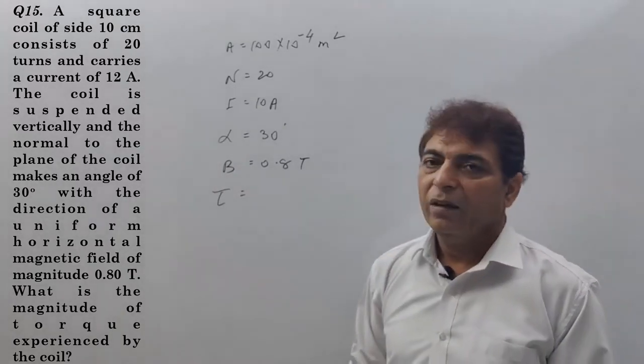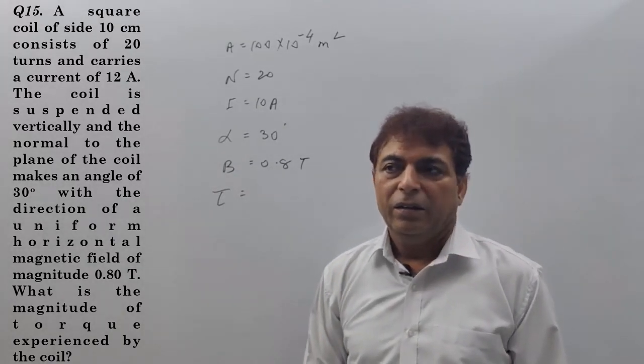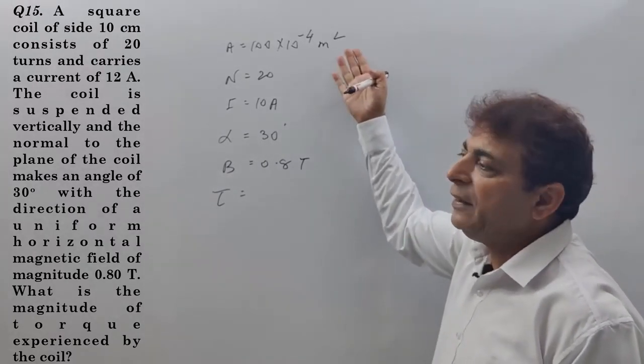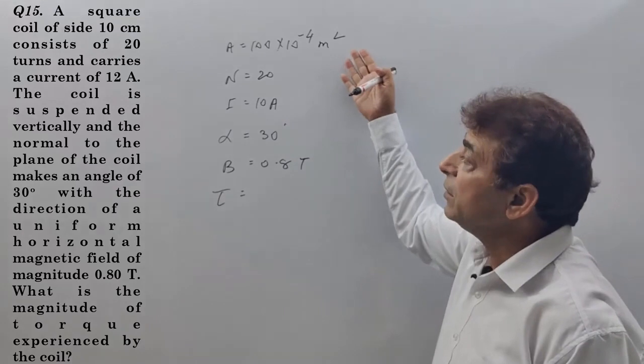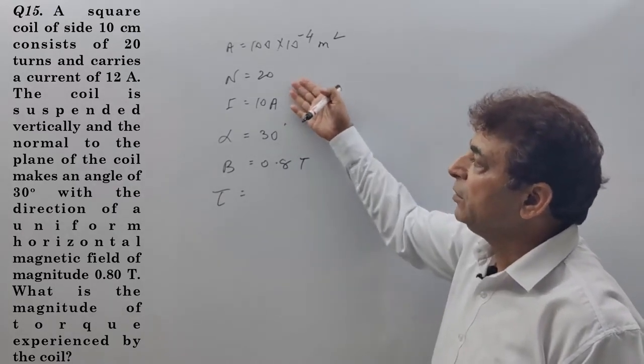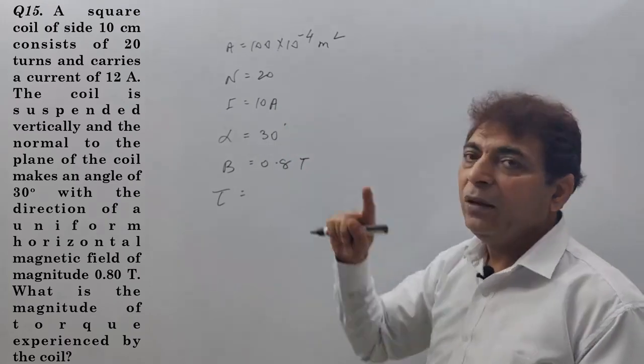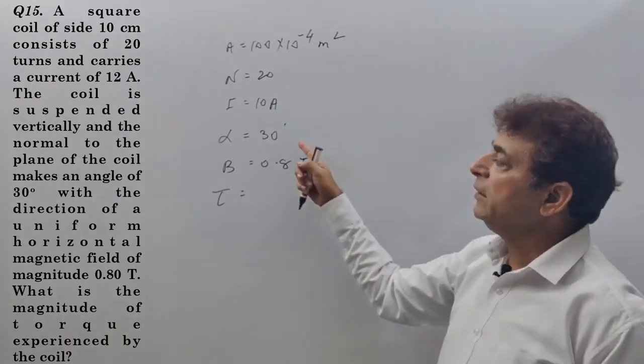What is the magnitude of torque? So, we have a coil with a certain area. The side of the coil is given. The number of turns of the coil is 20. It carries a current of 10 ampere and the normal to the plane of the coil makes an angle of 30 degrees with the magnetic field.